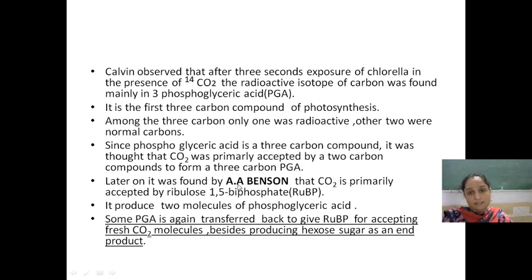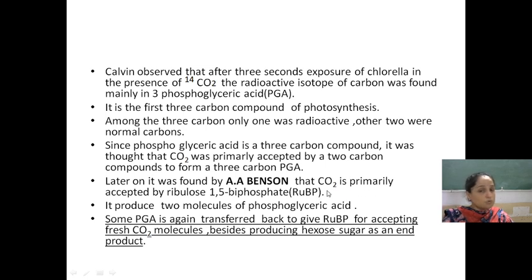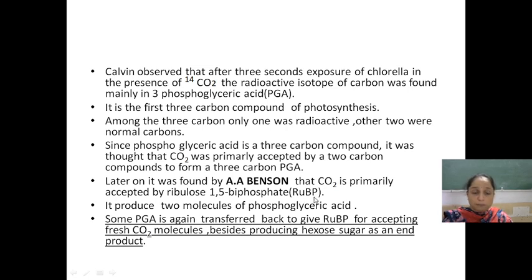Later on, it was found by another scientist named Benson that the CO2 was not accepted by a 2-carbon compound. Instead, it was accepted by a 5-carbon compound named ribulose-1,5-bisphosphate (RUBP). So the compound that primarily accepted CO2 was the 5-carbon compound RUBP. An important abbreviation: 3-phosphoglyceric acid is also known as PGA, and ribulose-1,5-bisphosphate is also known as RUBP.